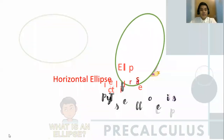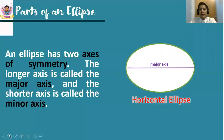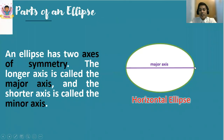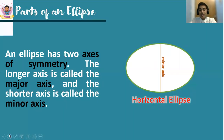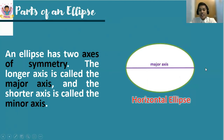An ellipse has two axes of symmetry. The longer axis is referred to as the major axis, and the shorter axis is called the minor axis. Observe this horizontal ellipse with the major axis — horizontal — while the minor axis is a vertical line. The type of ellipse is determined by the type of major axis, so since the major axis is horizontal, the ellipse is a horizontal ellipse.